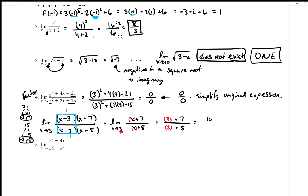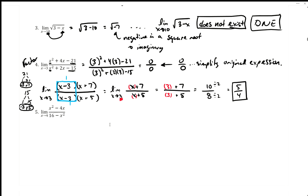3 + 7 is 10, and 3 + 5 is 8. This is now a regular number. Notice both divide by 2, so we simplify to 5/4. That's our final answer for the limit.